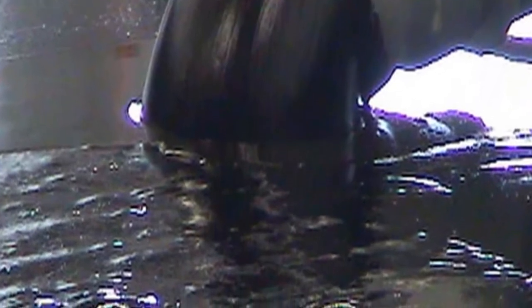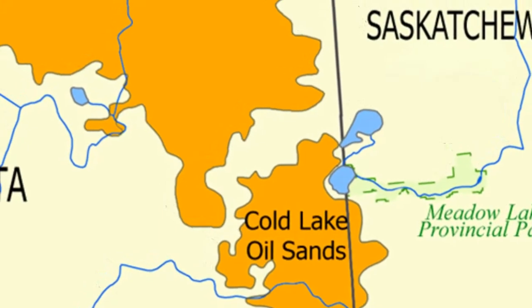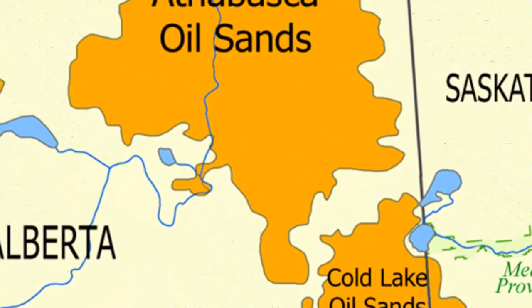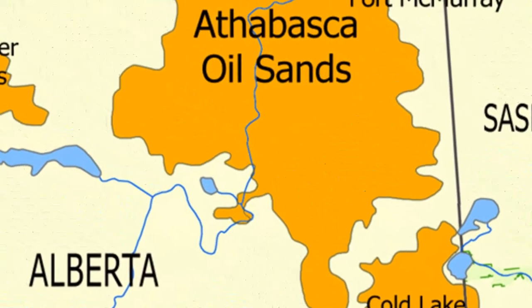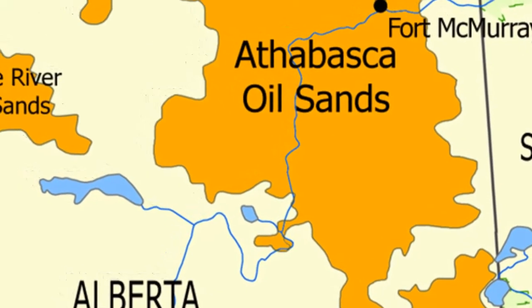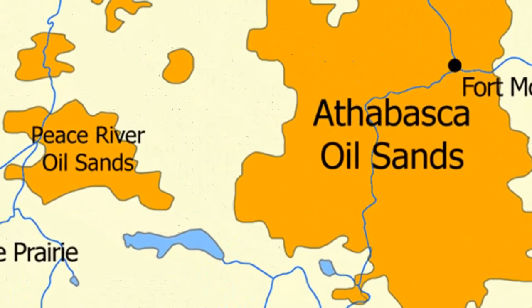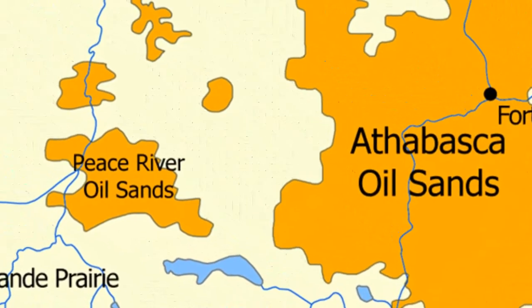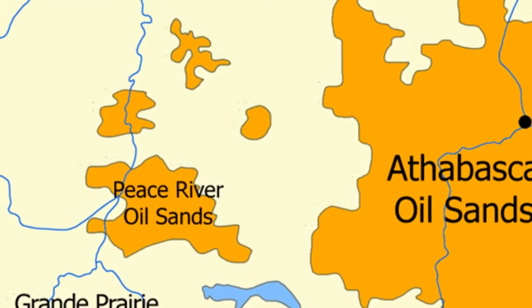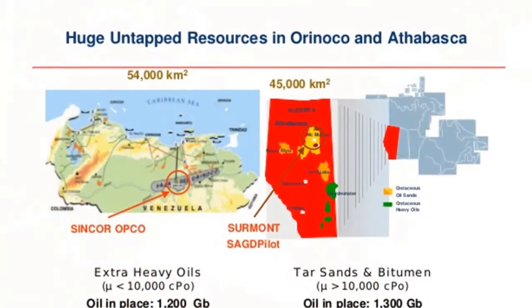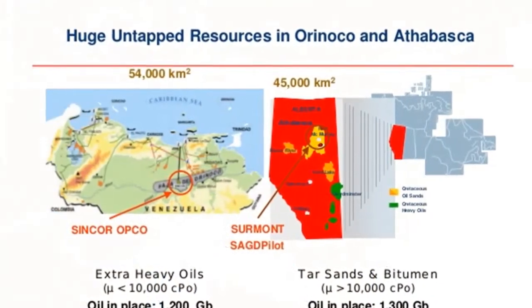In oil sands, the oil is much more viscous and cannot simply be pumped out. Substantial oil sand deposits occur in several locations around the world. The two largest are the Athabasca oil sands in the Canadian province of Alberta and the Orinoco River deposit in Venezuela.